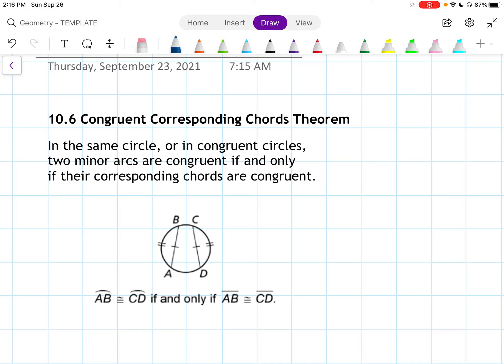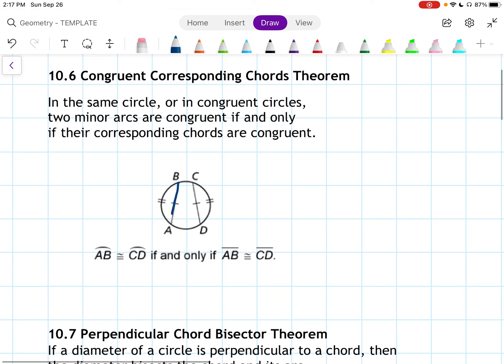In the same circle or in congruent circles, two minor arcs are congruent if and only if their corresponding chords are congruent. So we have chord AB here is congruent to chord CD. And then if we looked at the arcs that correspond with them, arc AB is congruent to arc CD. In this if and only if statement, it says we could go either direction with that. We could either start off by saying that the chords are congruent and then we could say that the arcs are congruent, or we could say that the arcs are congruent so the chords have to be congruent.